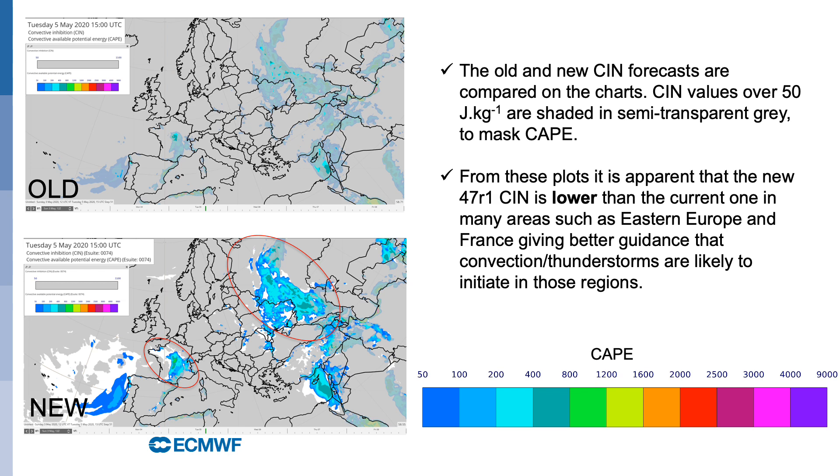The changes described here improve the usability of convective inhibition by bringing CIN values closer to those predicted by the parcel theory, which is widely used in forecasting practice, and by allowing better interpretation of CAPE and CIN when used together, as they now both refer to the same most unstable air parcel.